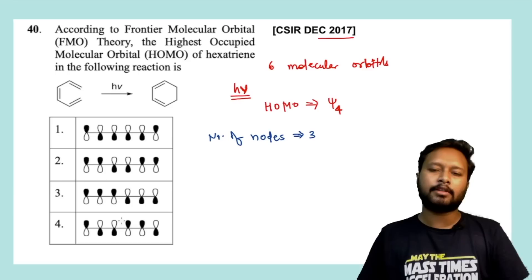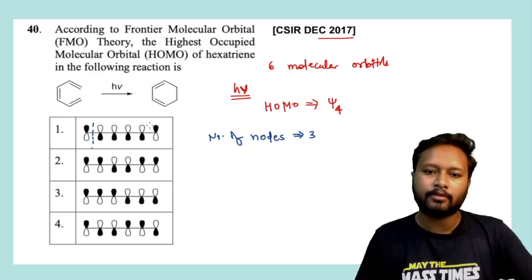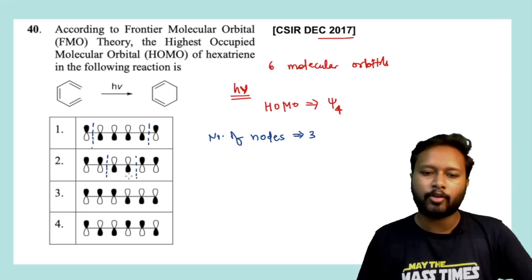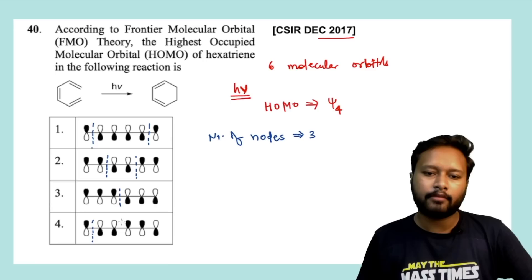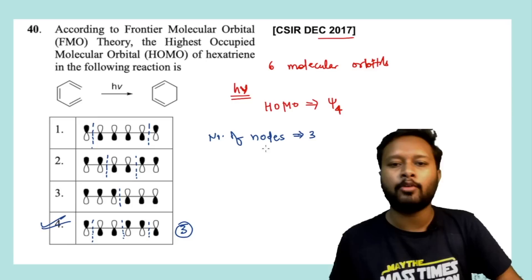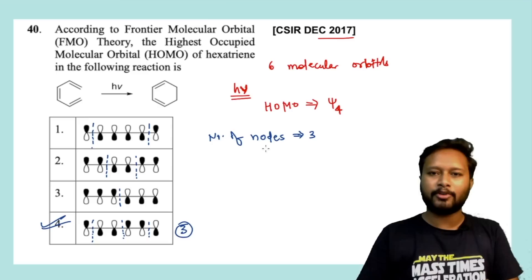You have to look at the options and see which has three nodes — where the sign is changing. Option 1 has two nodes, option 2 has two nodes, option 3 has just one node at the center, and option 4 has three nodes. Option 4 denotes ψ₄ and that is the HOMO for this reaction. That's how you approach this question.